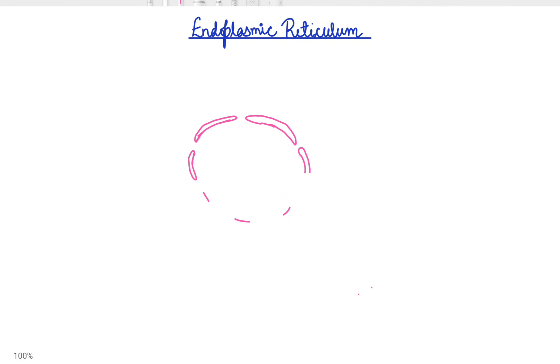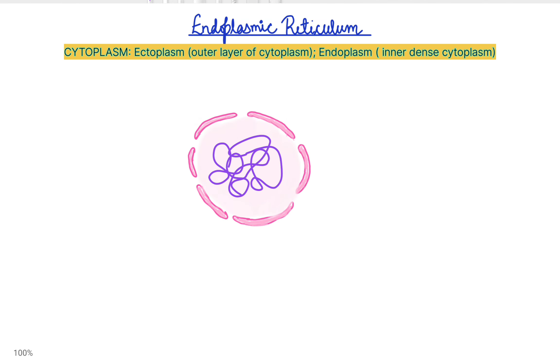The inner dense cytoplasm of the cell is called endoplasm, and the network of double-walled structures concentrated in this endoplasm is called endoplasmic reticulum. Endoplasmic reticulum is a network of membrane inside the cell through which proteins and other molecules move.